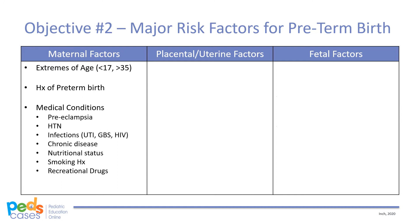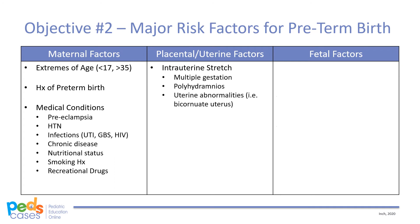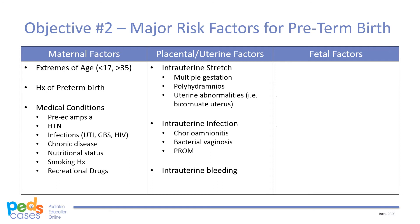The second category is placental or uterine factors, referring to changes or abnormalities of the uterus and placenta that predispose infants to preterm birth. One example is significant intrauterine stretch, which can be caused by multiple gestation, polyhydramnios, or uterine abnormalities such as bicornuate uterus, as seen in Catherine's case. Another example is intrauterine infection such as chorioamnionitis, bacterial vaginosis, and premature rupture of membranes. Finally, any intrauterine bleeding, for example due to placental abruption or antepartum hemorrhage, can also lead to preterm delivery.